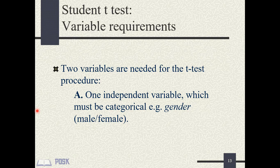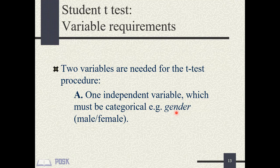The independent variable's variations are not affected by other variables in the equation — that is why it is referred to as independent. In the example on this slide, gender is the independent variable because its variations are not affected by PCV. The researcher can manipulate gender by adding or removing either sex based on the research methodology. The opposite is the dependent variable, whose variations are dependent on the independent variable.